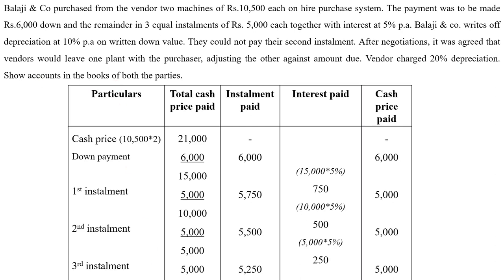In this question, the purchaser could not pay their second installment, so there is default by the buyer. After negotiation, the vendor leaves one plant with the higher purchaser and takes back only one plant. Totally two machines were sold — one is left with the buyer, and the other is taken by the seller. So there is default in this problem and, in consequence of the default, the seller is taking partial repossession — one plant taken by the seller, one left with the buyer.